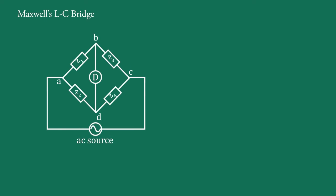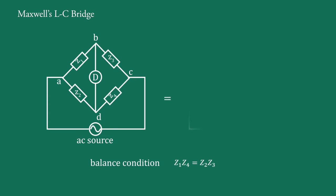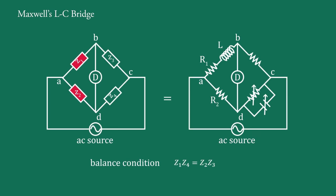We have seen the basic bridge balance condition in a previous video. It is drawn like this and the balance condition is given by this formula. If we replace the components Z1, Z2, Z3, and Z4 in this way, then a specific bridge circuit is formed which is known as Maxwell's LC bridge.